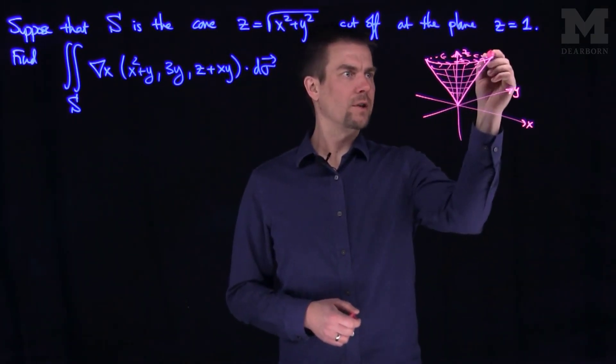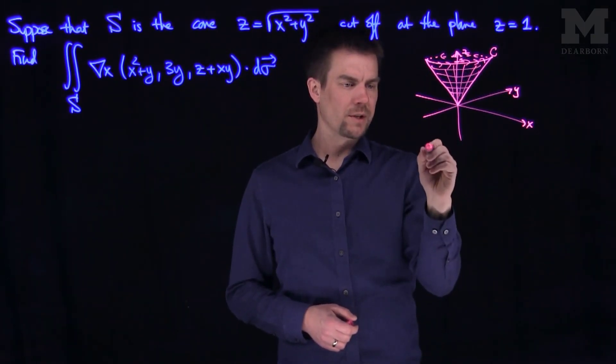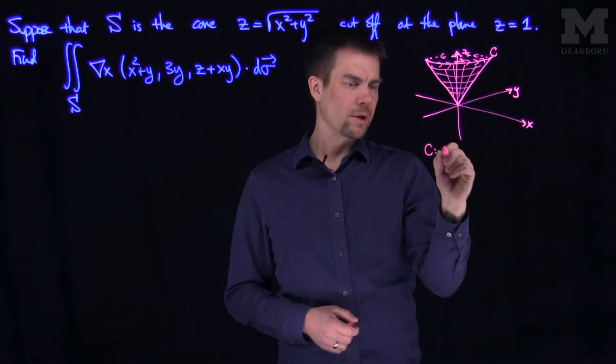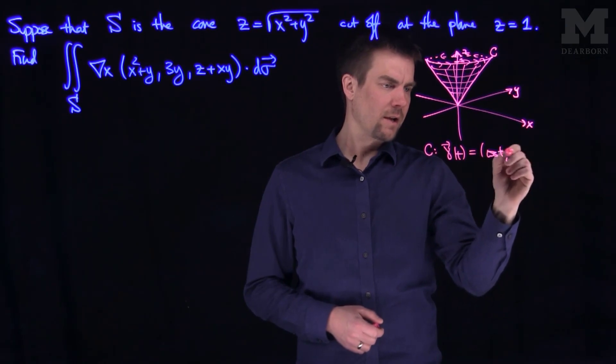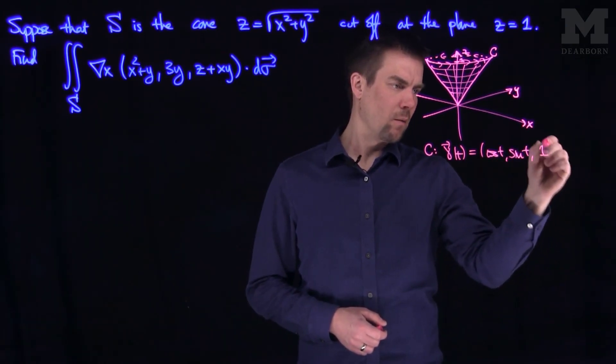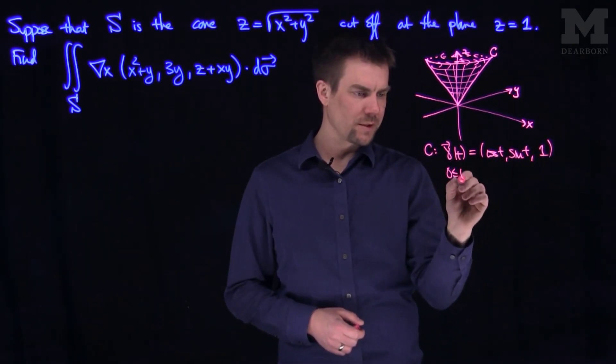So this curve over here, let's call that curve C. And so what is C? C is going to be the curve gamma of T is cosine of T comma sine of T comma 1 for T between 0 and 2 pi.